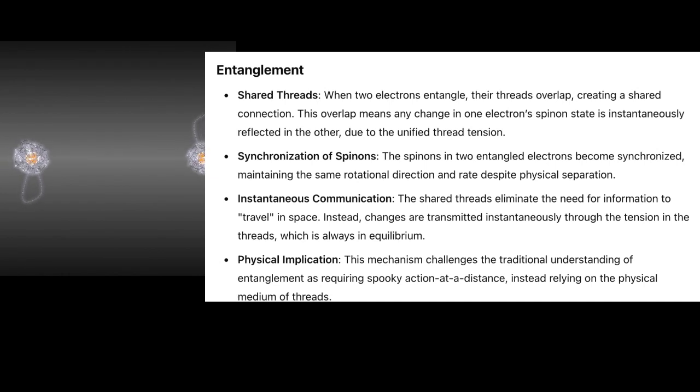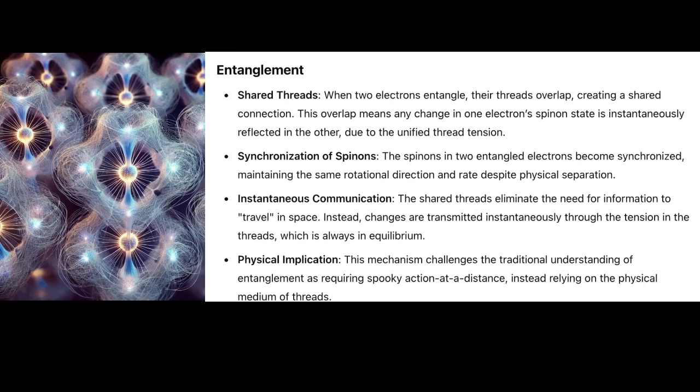Entanglement: Shared Threads. When two electrons entangle, their threads overlap, creating a shared connection. This overlap means any change in one electron's spinon state is instantaneously reflected in the other due to the unified thread tension.